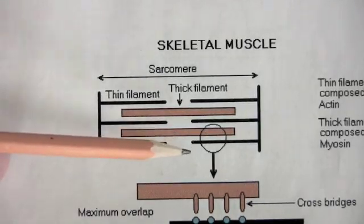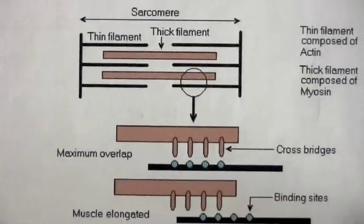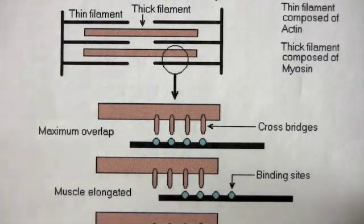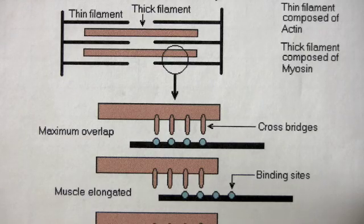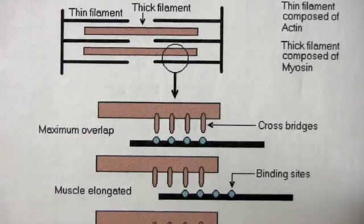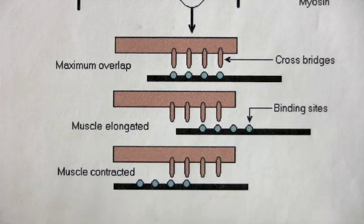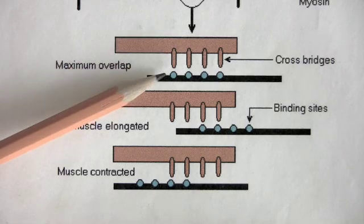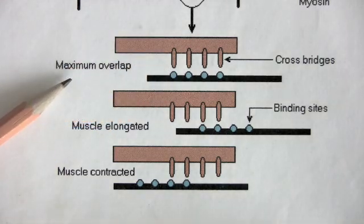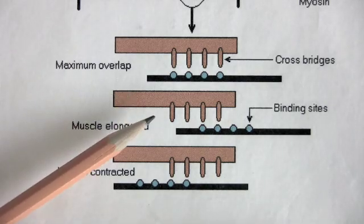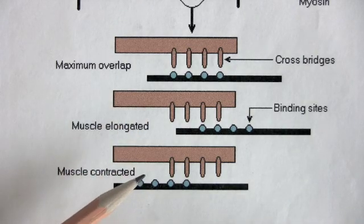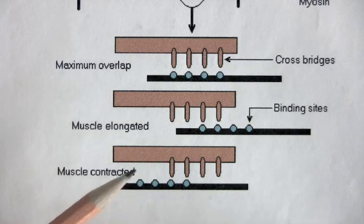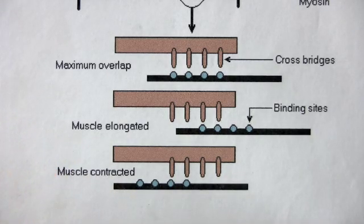Let's enlarge one of the thick filaments and one of the thin filaments. Here you have the thick filament with four cross bridges. The blue dots represent the myosin binding sites on the actin. Skeletal muscle contraction can begin at various states of stretch. The thick and thin filaments can be overlapped — this is maximum overlap. The muscle can be stretched further, or the muscle can be less stretched. In each case, a contraction of the muscle can begin.